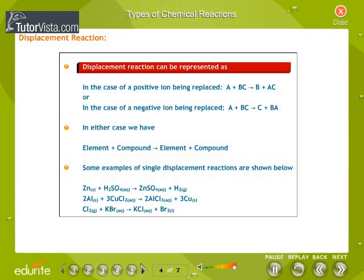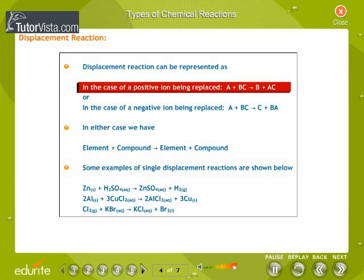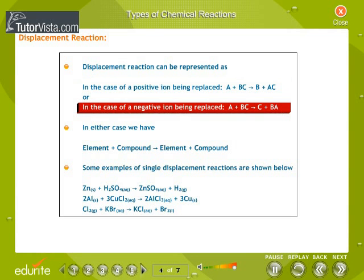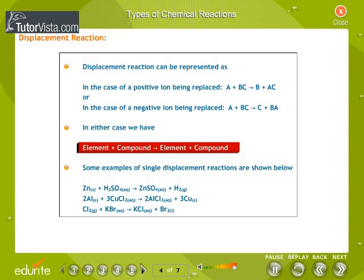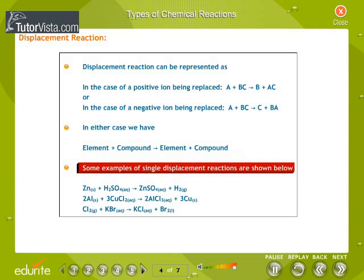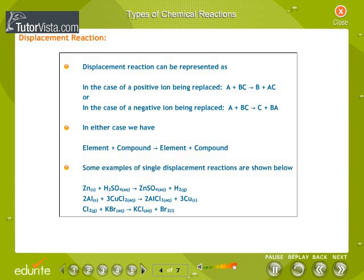A displacement reaction can be represented as: in the case of a positive ion being replaced, A + BC → B + AC; or in the case of a negative ion being replaced, A + BC → C + BA. In either case, we have an element plus a compound producing an element plus a compound. Some examples of single displacement reactions are shown here.